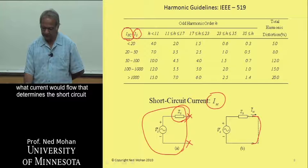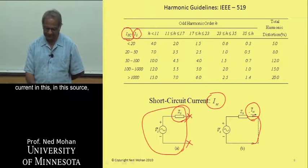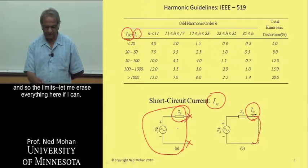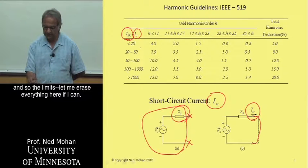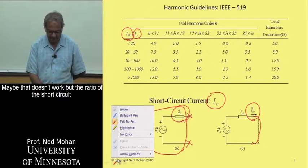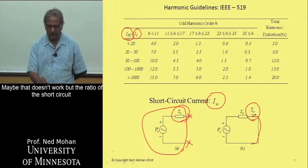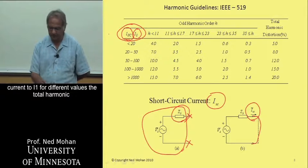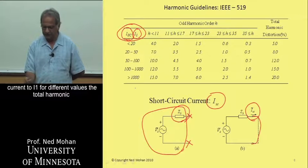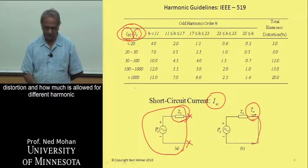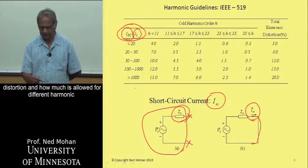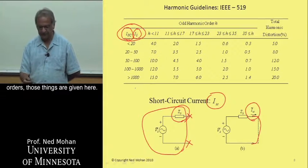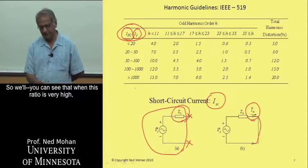And so the limits, the ratio of the short circuit current to I1 for different values, the total harmonic distortion, and how much is allowed for different harmonic orders, those things are given here.